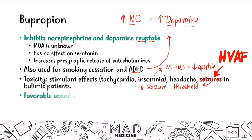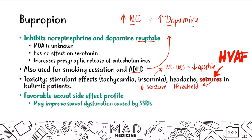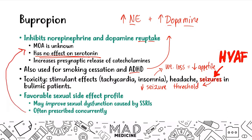One favorable side effect of bupropion is that it can improve sexual dysfunction caused by SSRIs. You can often give bupropion with an SSRI because bupropion has no effect on serotonin, so you are not increasing the risk of serotonin syndrome. However, you don't want to give it with an SNRI because SNRIs already inhibit norepinephrine reuptake, and you don't want excessive norepinephrine levels. With an SSRI it's okay; with an SNRI, it is not.